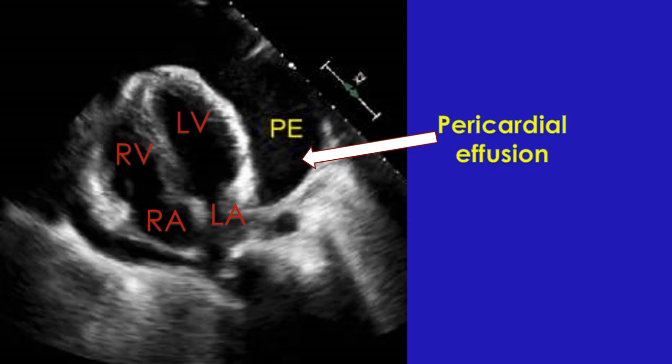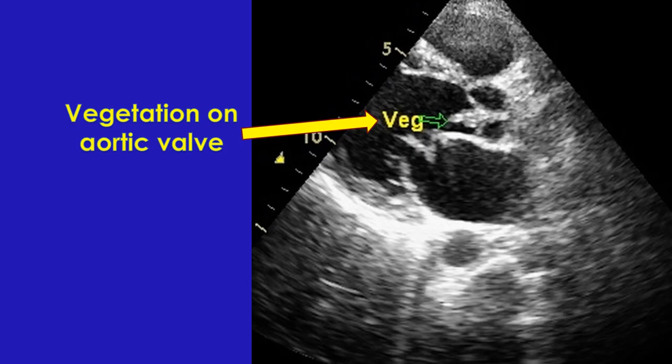If there is fluid collection in the pericardial cavity, it is reported as pericardial effusion, with the estimated amount reported as mild, moderate or large. Diastolic collapse of the right atrium and right ventricle may be noted in cardiac tamponade. Gross thickening and calcification of the pericardium may occur in chronic constrictive pericarditis. Vegetations attached to the valves can be infective or non-infective. Non-infective vegetations may be seen in Libman-Sacks endocarditis of systemic lupus erythematosus and marantic endocarditis, the latter being non-bacterial thrombotic endocarditis seen in advanced malignancy.